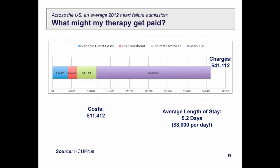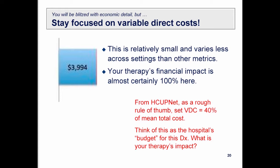About six dollars out of every ten is overhead — unit overhead, fixed direct costs, and indirect overhead like the CEO's salary, a billboard on I-94, or a subsidy to the cafeteria. So the budget you're working with to actually care for a patient is only about four thousand dollars. When thinking about the value proposition for your therapy, you're not working with forty-one thousand. As a rough rule of thumb, divide the bill by ten to get the direct cost of patient care.